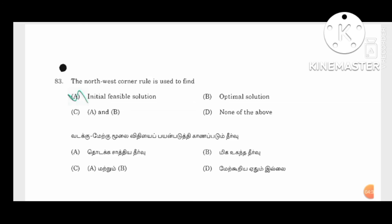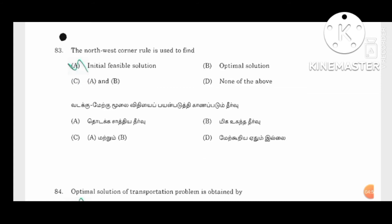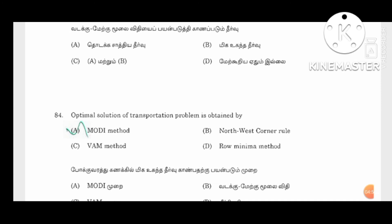The approximation method is used to find the initial basic feasible solution (IBFS). The optimal solution find method is also used by the initial basic feasible solution. In this case, the IBFS find method is not used by the north-west corner method. We work with the initial basic feasible solution using the least cost method approximation.